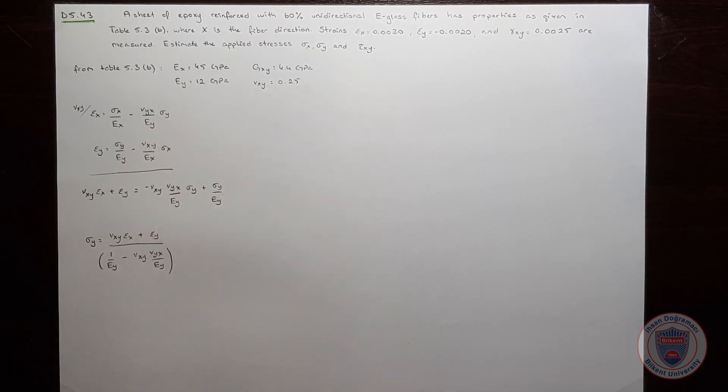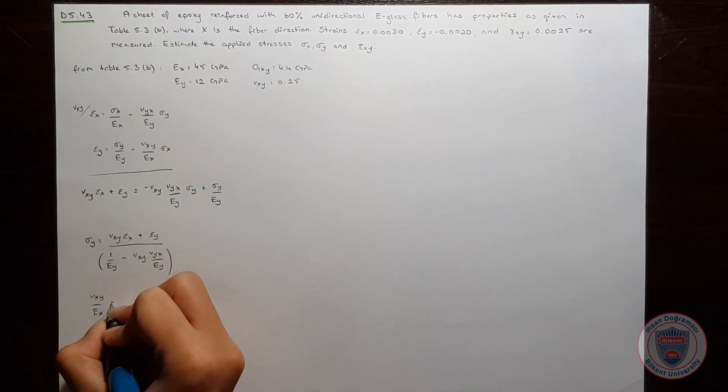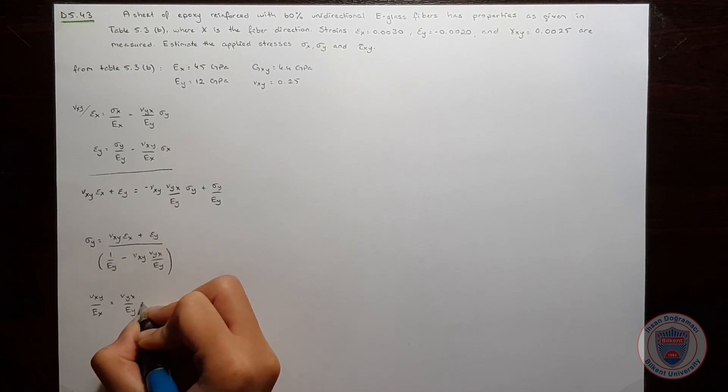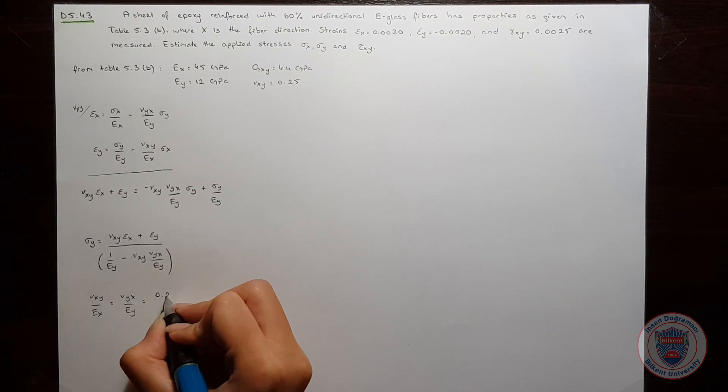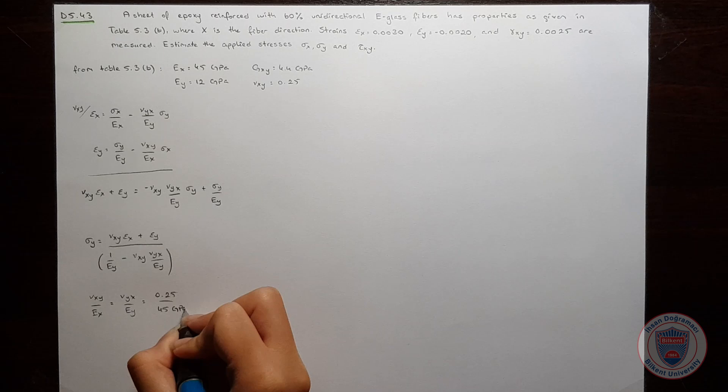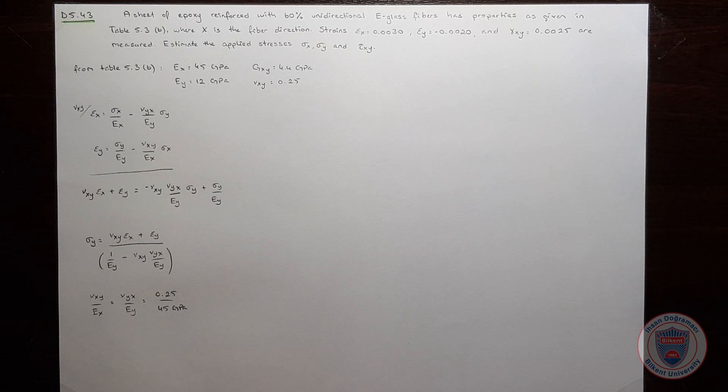Now, we have all the values except νyx and we know that νxy over EX is equal to νyx over EY. And it is equal to 0.25 over 45 GPa. We can use this ratio in this equation and compute σy.